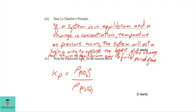Part three: state Le Chatelier's principle. Le Chatelier's principle states that if a system is in equilibrium and a change in concentration, temperature, or pressure occurs, the system will act in such a way to oppose the effect of the change and return to equilibrium over a finite period of time.